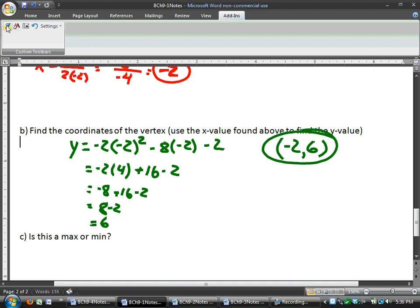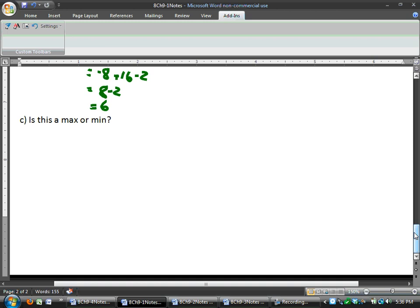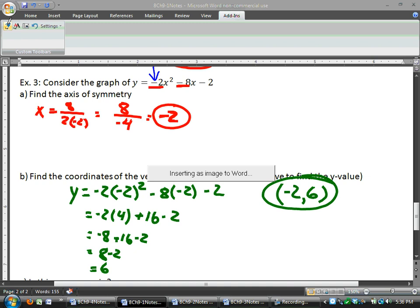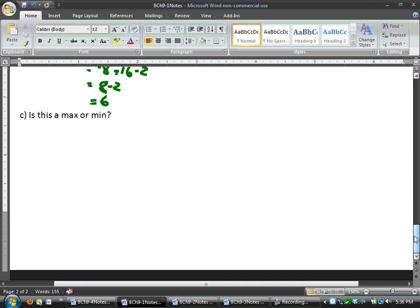Now, if we look at one last step here, I want to know if this is a max or a min. If I look back at my equation, I look at the value in front of my x squared, my a value, I see that it's negative. Since it's negative, that means that it's opening down. When it's opening down, it means I have a max.